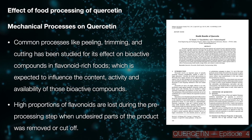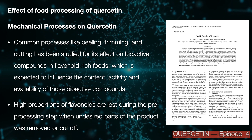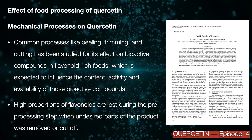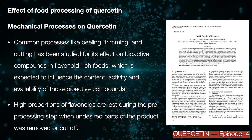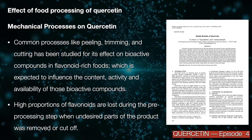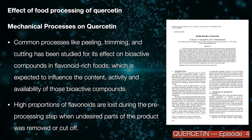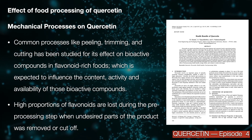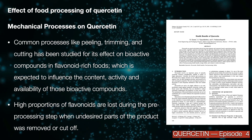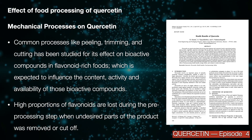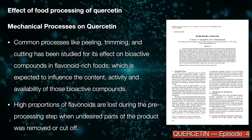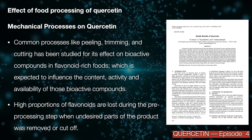Mechanical processes on quercetin. Common processes like peeling, trimming, and cutting have been studied for their effect on bioactive compounds in flavonoid-rich foods, which is expected to influence the content, activity, and availability of those bioactive compounds.